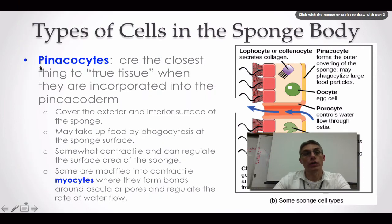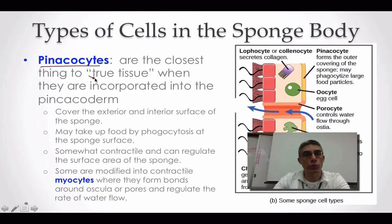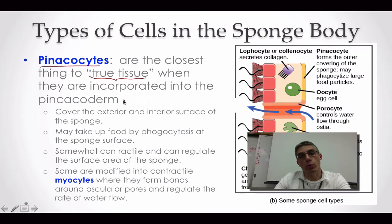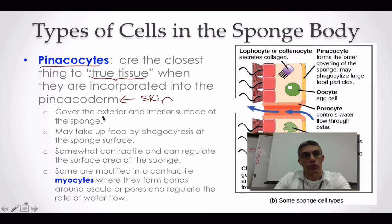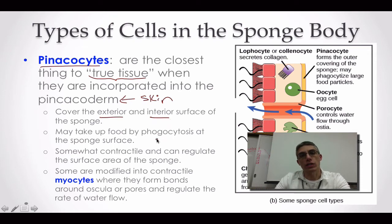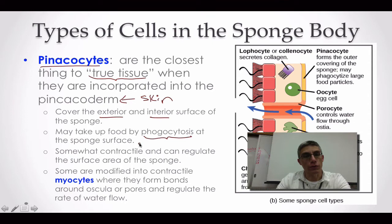The next type of cell we're going to look at is one called a pinacocyte. The pinacocyte is going to be a group of cells that comes closest to representing true tissue within the sponge. They're going to be incorporated within what we call the pinacoderm, which is very similar to what we would consider skin in the organism. This pinacoderm is going to be found both on the exterior and interior surfaces of the sponge. Some of these pinacocytes might participate in phagocytosis, so they actually might have a role in feeding for some sponges.